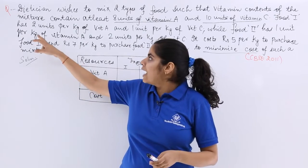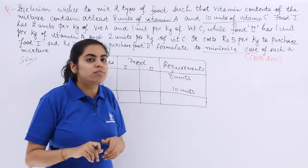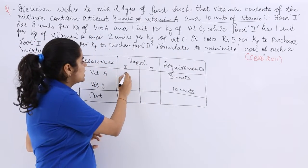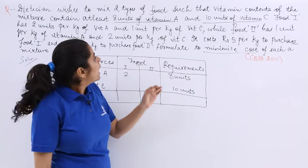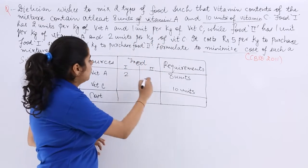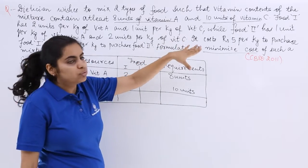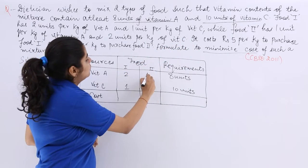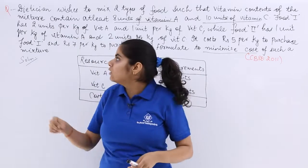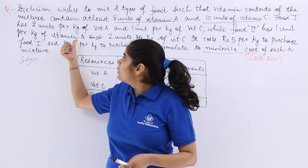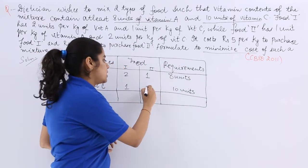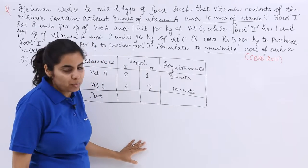Food 1 which has 2 units per kg of vitamin A. So food 1 has 2 units per kg and 1 unit per kg of vitamin C. Next there is also another food which is food 2 which has 1 unit per kg of vitamin A and 2 units of vitamin C per kg.